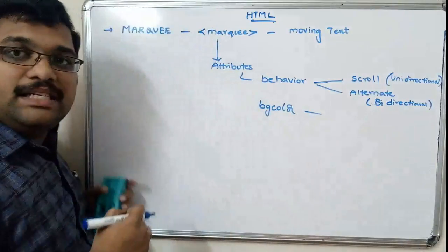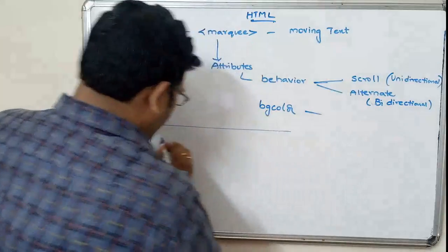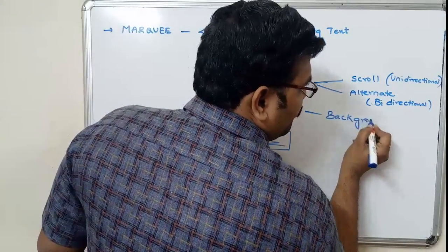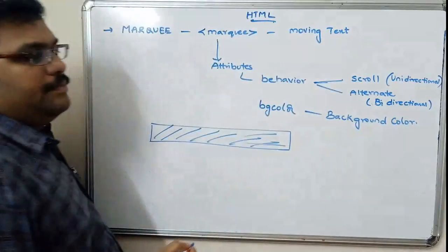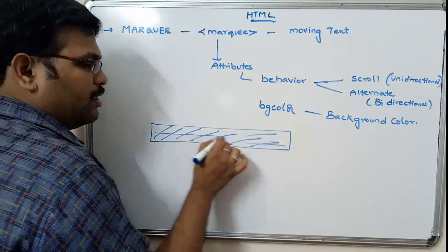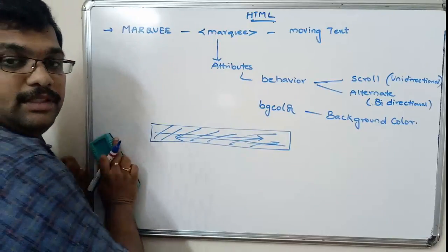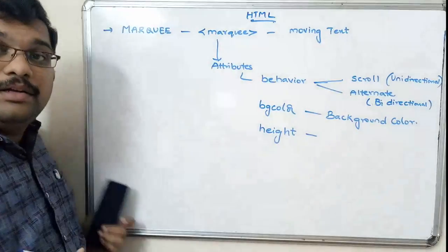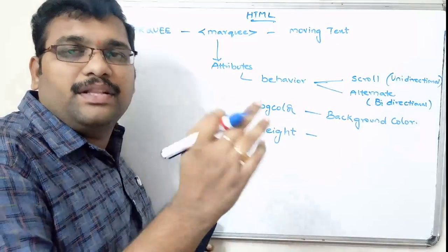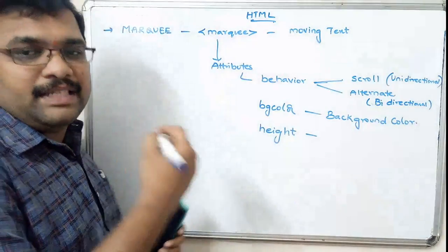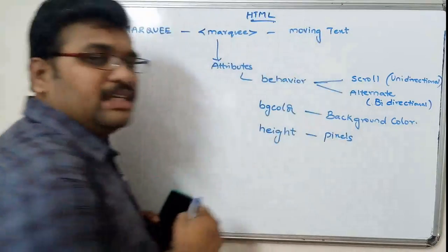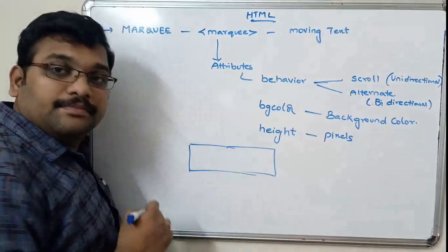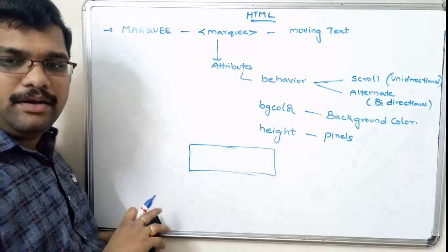bgcolor means background color — whatever text we are displaying and moving will have a background color applied. The height attribute specifies the height of the area in which the text moves, either as a percentage or in pixels. So height defines the vertical space for the text moving from right to left or left to right.